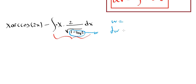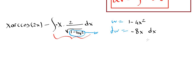If w is 1 minus 4x squared, then dw will be the derivative of 1 minus 4x squared, which by the power rule is negative 8x dx. Now let's write everything in terms of w. We can solve for dx to make it ready: dx is negative dw over 8x.